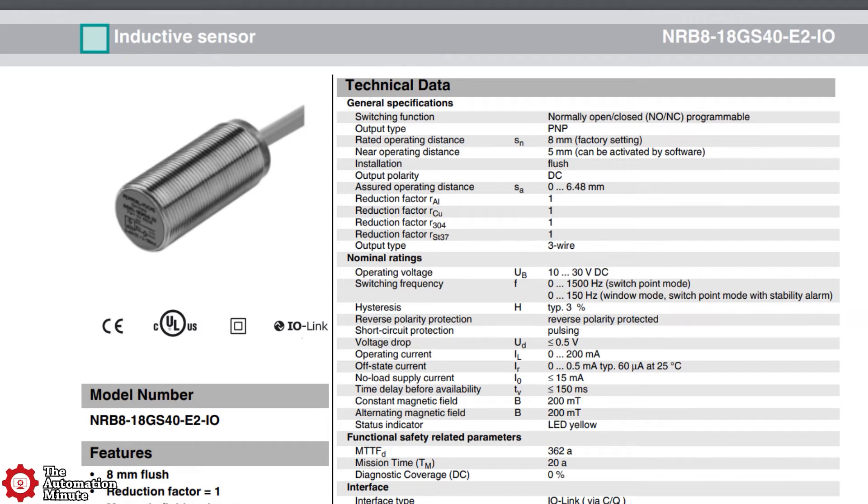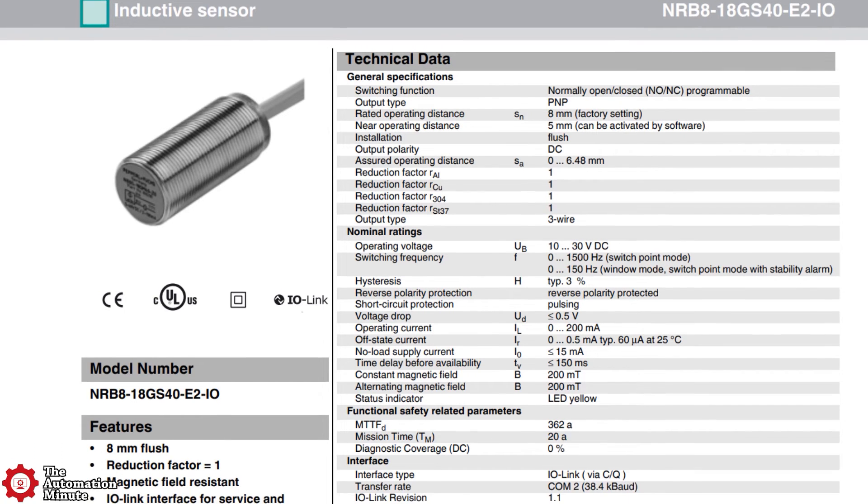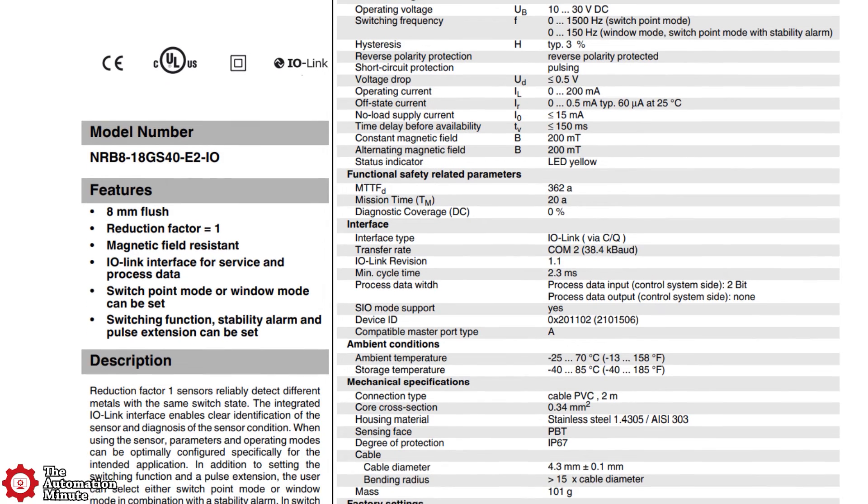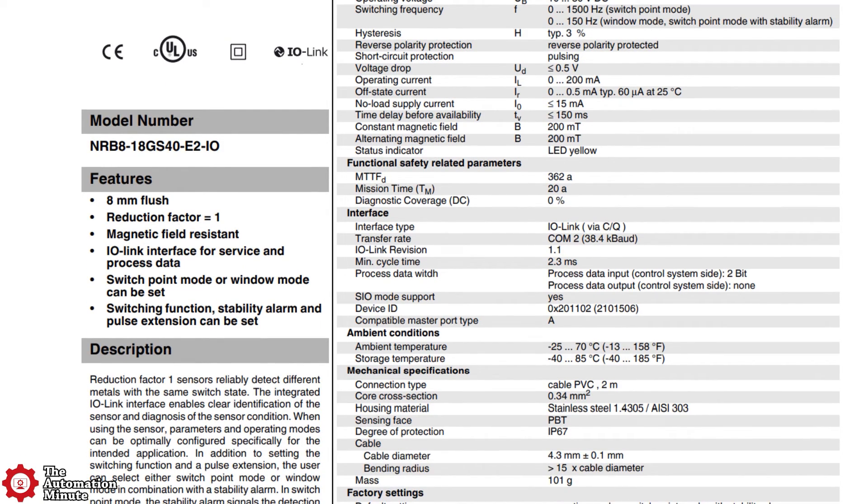The prox itself has a factory-set operating range of 8mm and an operating voltage range of 10-30V DC. Its housing is made of stainless steel, and it's rated for IP67, and a temperature range of minus 25 to 70C.